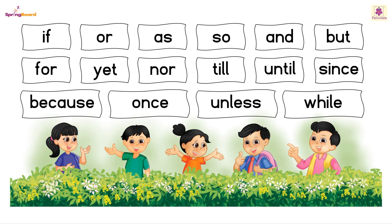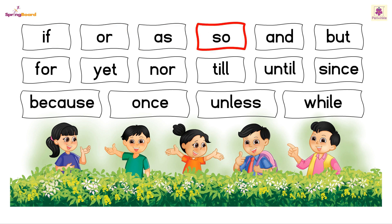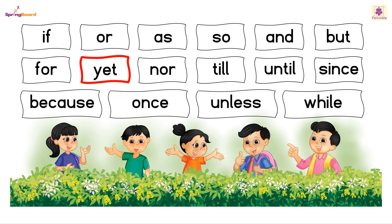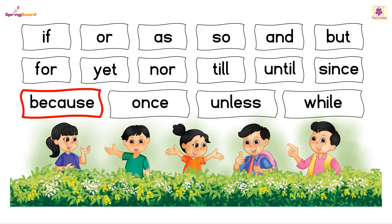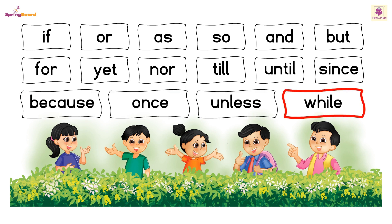Let's read the set of words together again: If, Or, As, So, And, But, For, Yet, Nor, Till, Until, Since, Because, Once, Unless, While.